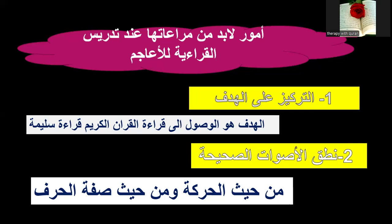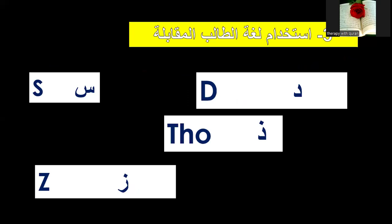ثانياً: نطق الأصوات الصحيحة من حيث الحركة وصفة الحرف. عند تدريس منهج القرائية يجب أن ينطق الطالب الأصوات الصحيحة: آ، با، تا، مع اكتمال الحركات. مثلاً 'أعوذ' لا تبقى 'أعوذو'؛ والضمة والكسرة يجب أن تكون مكتملة. ثالثاً: استخدام لغة الطالب المقابلة — مثلاً حرف 'د' في الإنجليزية D كـ Dubai، و'س' كـ سين، و'ذ' كـ Tha، وهكذا.